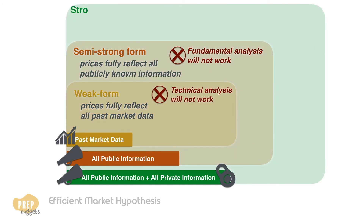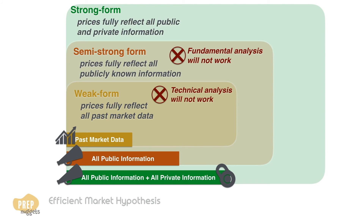The highest level of market efficiency is the strong form market efficiency. In such a market, security prices fully reflect both public and private information. So by definition, a market that is strong form efficient is also semi-strong and weak form efficient. This implies that even insiders with material private information would not be able to earn abnormal returns, as prices already fully reflect the implications of the insider information.